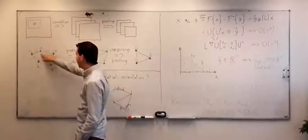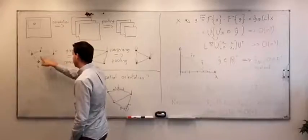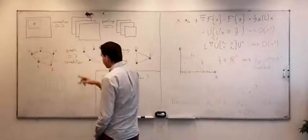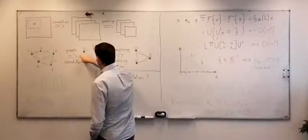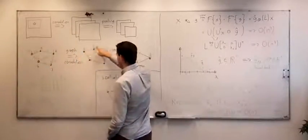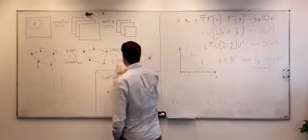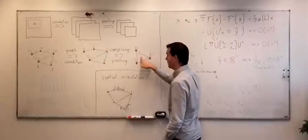Given a graph and a graph signal defined on the nodes of the graph, we can convolve it with multiple filters, which gives us multiple graph signals, which we can then pool to reduce the dimensionality.